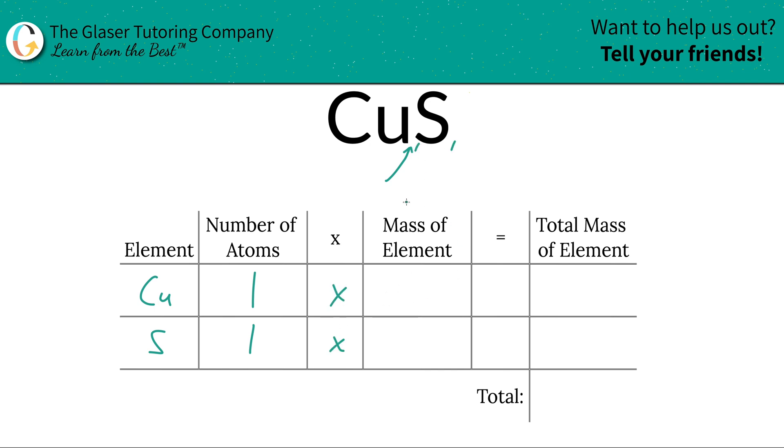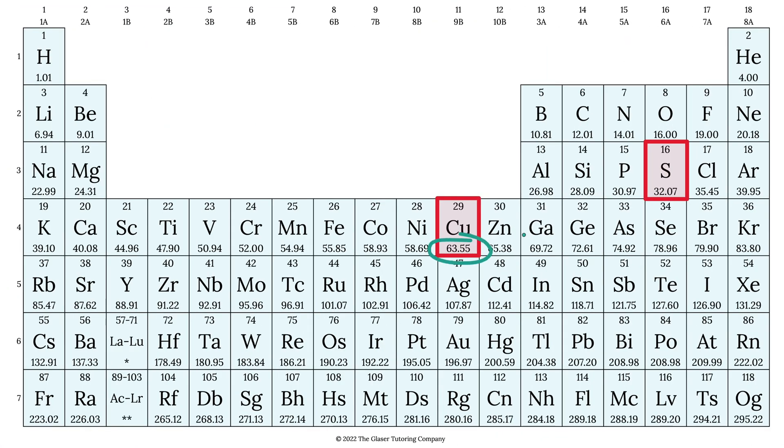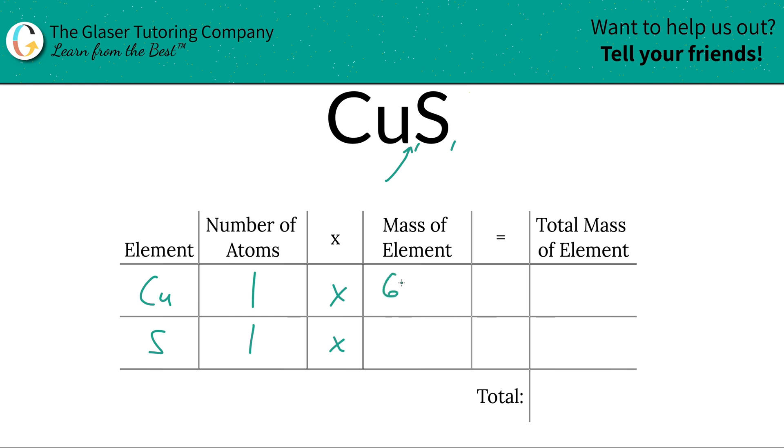And then we're going to take those number of atoms and multiply it by the mass of each particular element. These masses are found on the periodic table. So copper's mass is 63.55, sulfur is about 32.07. So that's what we're going to plug in.